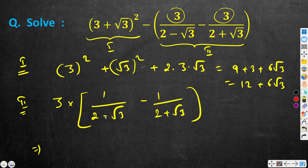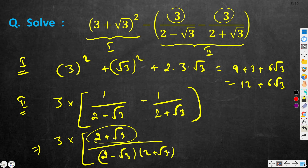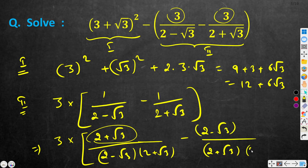For rationalization, we multiply by the conjugate. So we multiply 1/(2 − √3) by (2 + √3)/(2 + √3) in the numerator and denominator, and we multiply 1/(2 + √3) by (2 − √3)/(2 − √3) in the numerator and denominator. We can rewrite this as 3·[(2 + √3)/((2 − √3)(2 + √3)) minus (2 − √3)/((2 − √3)(2 + √3))].